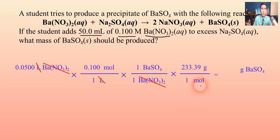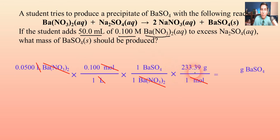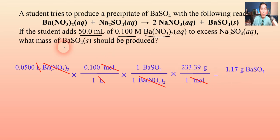One barium, one sulfur, and four oxygens gives us about 233.39 grams per mole. Moles cancel, and the arithmetic is 0.05 times 0.1 times 233.39, giving an answer of 1.17 grams of barium sulfate produced. Notice it's basically the same stoichiometry as always — except in step one we're using molarity to convert to moles instead of the molar mass.